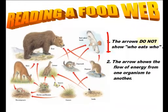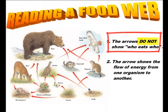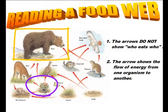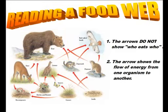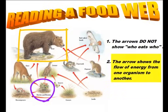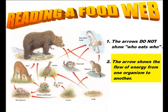The first rule of reading a food web is knowing that the arrows don't show who eats who. For example, you have some berries and flowers, and a bear goes foraging on berries and flowers. If you thought the arrow showed who eats what, you'd be saying the berries and flowers eat the bear — and I've never seen a bear taken down by a berry bush. The arrows show the flow of energy from the organism being eaten. So the berries and flowers have energy that flows into the bear as the bear eats them.